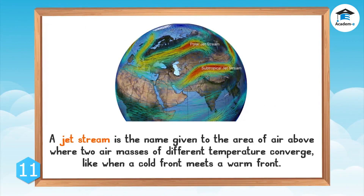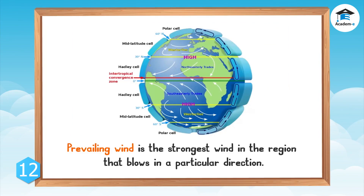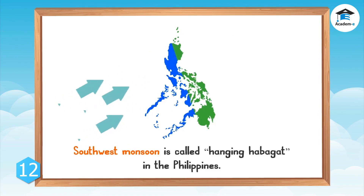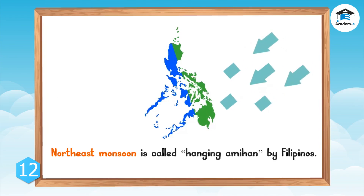A jet stream is the area of air above where two air masses of different temperature converge, such as when a cold front meets a warm front. A monsoon is a continuous change in the direction of prevailing winds in a region. The prevailing wind is the strongest wind that blows in a particular direction. The Philippines experiences two distinct monsoons: the southwest monsoon, called Hanging Habagat, which brings significant rainfall to the western part of the country from May to September; and the northeast monsoon, called Hanging Amihan, a cool and dry breeze that may bring rains to the eastern part of the country from November to March.